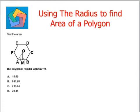The first one says find the area, and we're given a polygon ABCDF centered at O. It says the polygon is regular with OA equals 9, where OA represents the radius of the polygon.